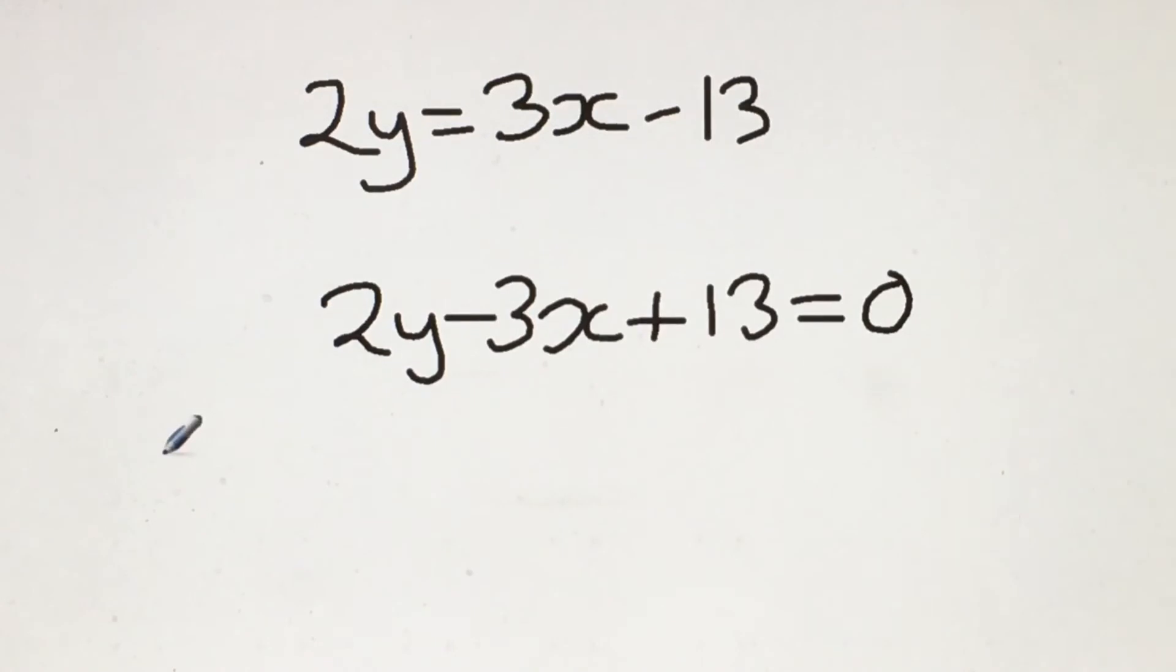I'm then going to multiply everything by minus 1. So we're left with 3x minus 2y minus 13 equals 0.